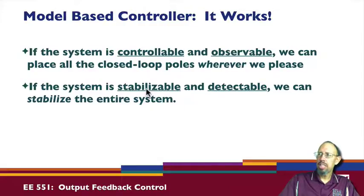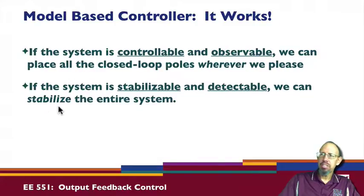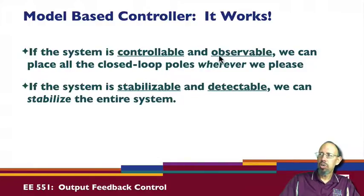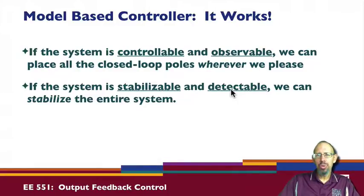If the system is stabilizable and detectable — stabilizable but not necessarily fully controllable, and detectable so that we can form a stable observer — then we can stabilize the entire system, even if it's unstable. The system does not have to be controllable and observable; it just needs to be stabilizable and detectable. This is the model-based control, or full order output feedback, problem.